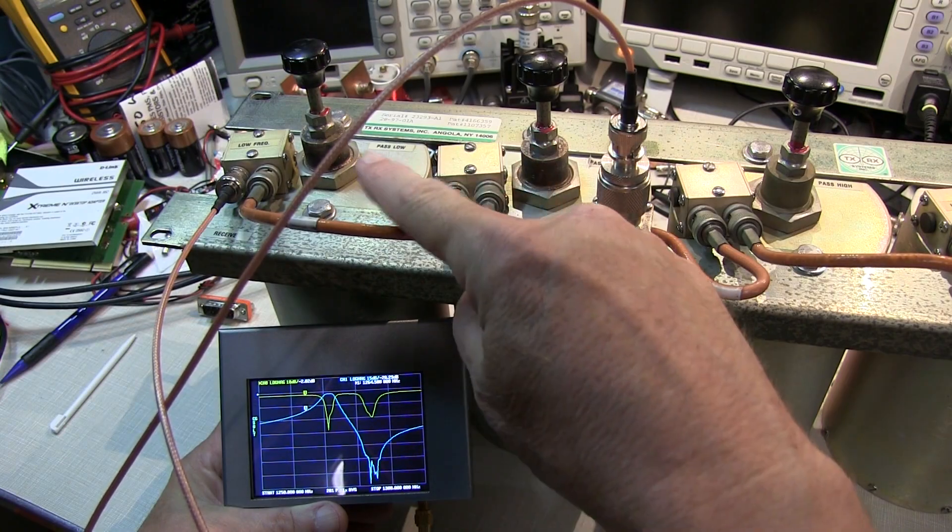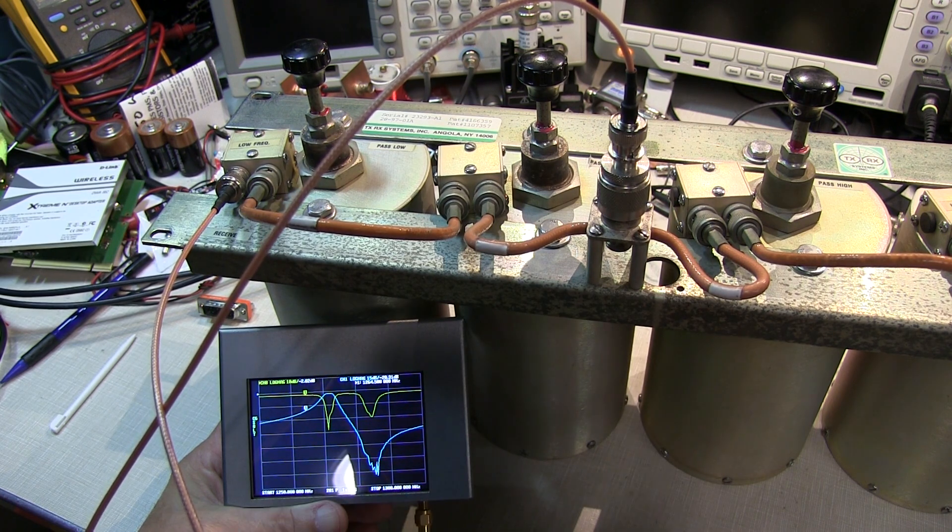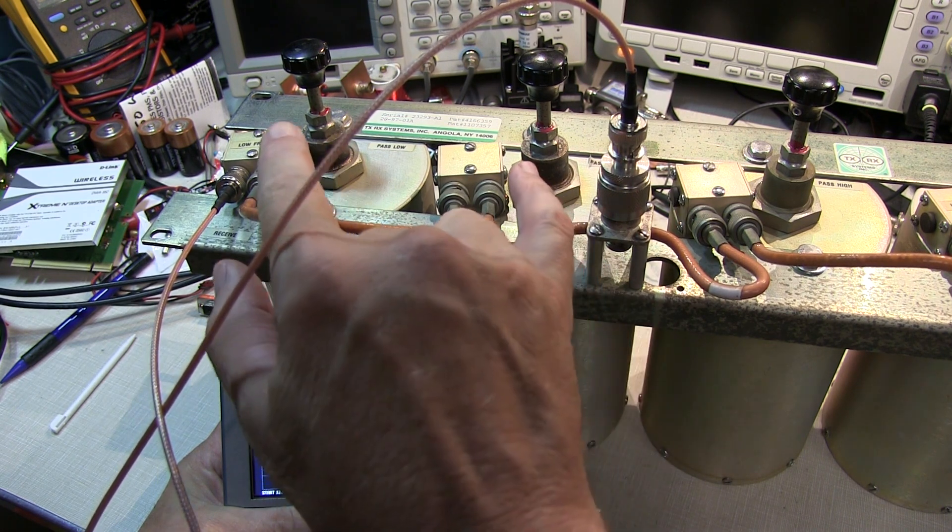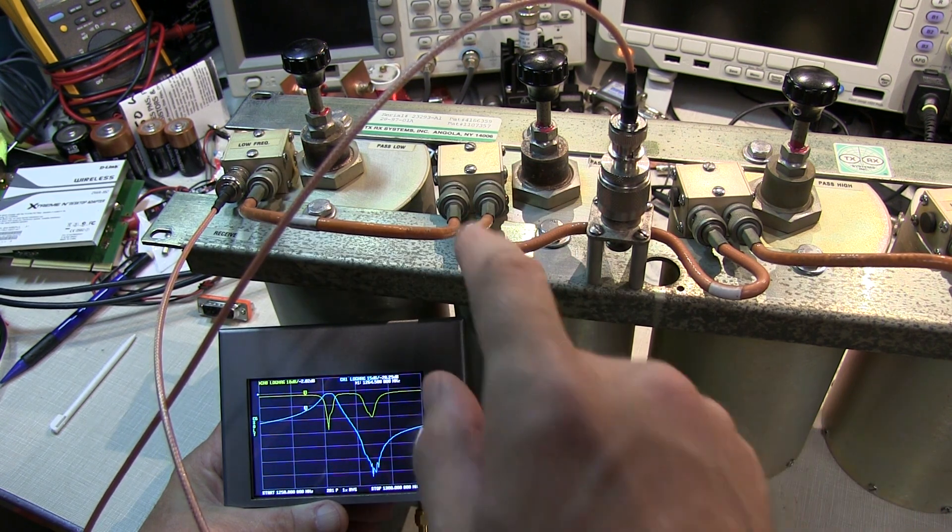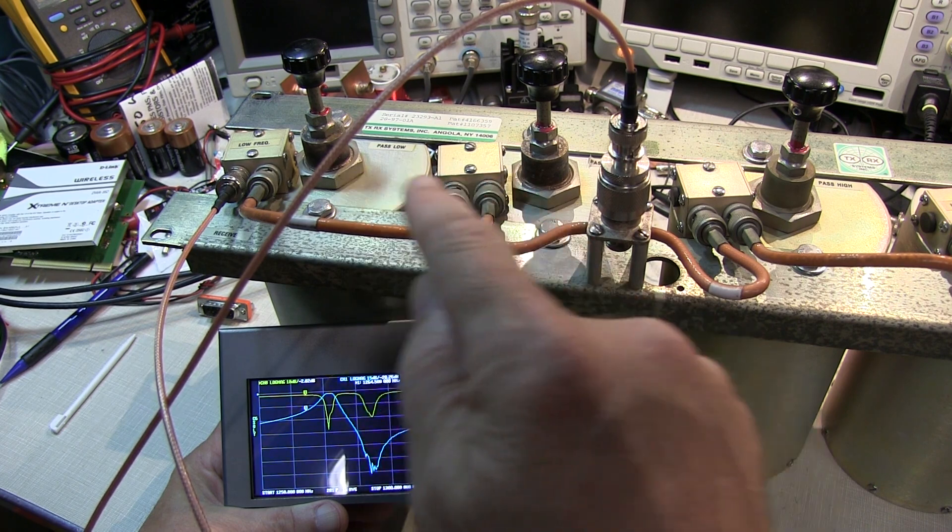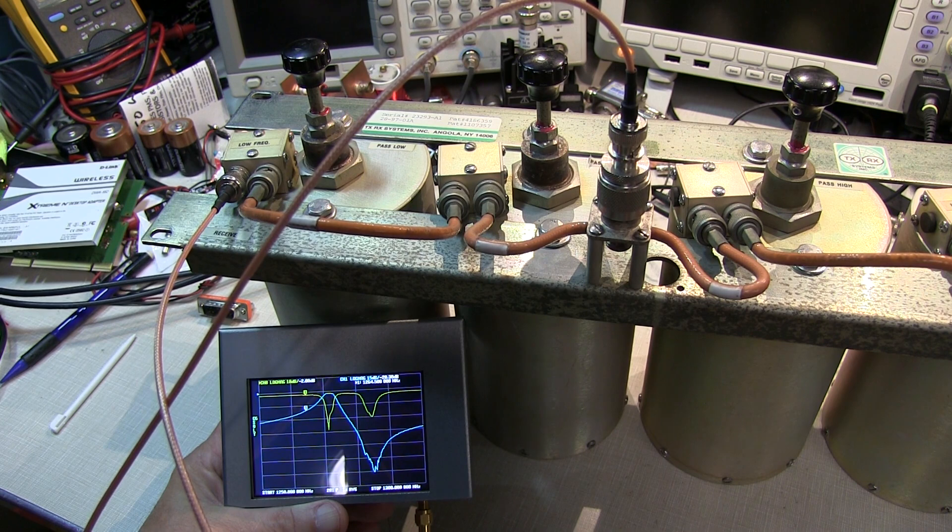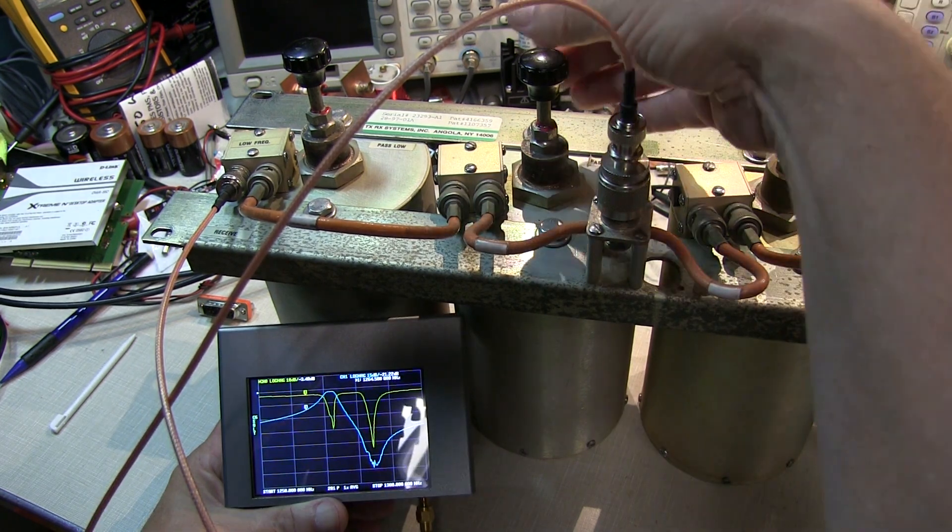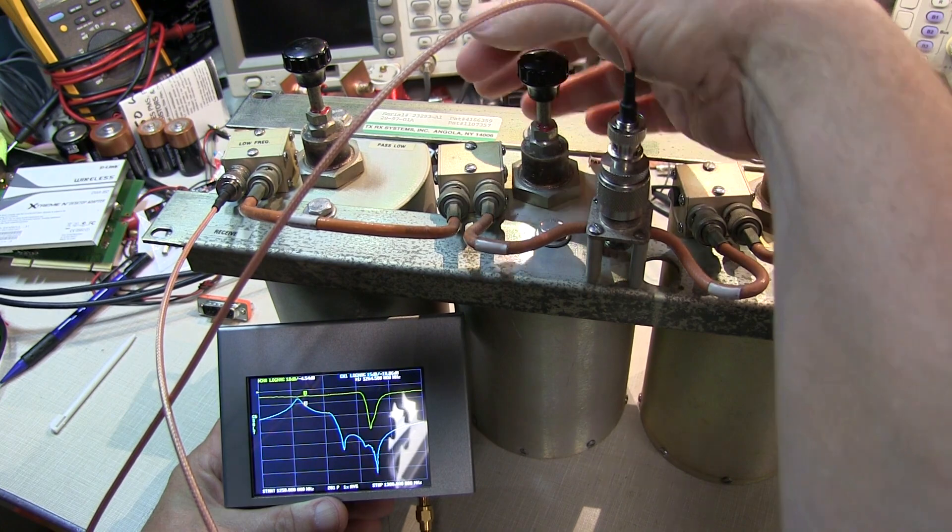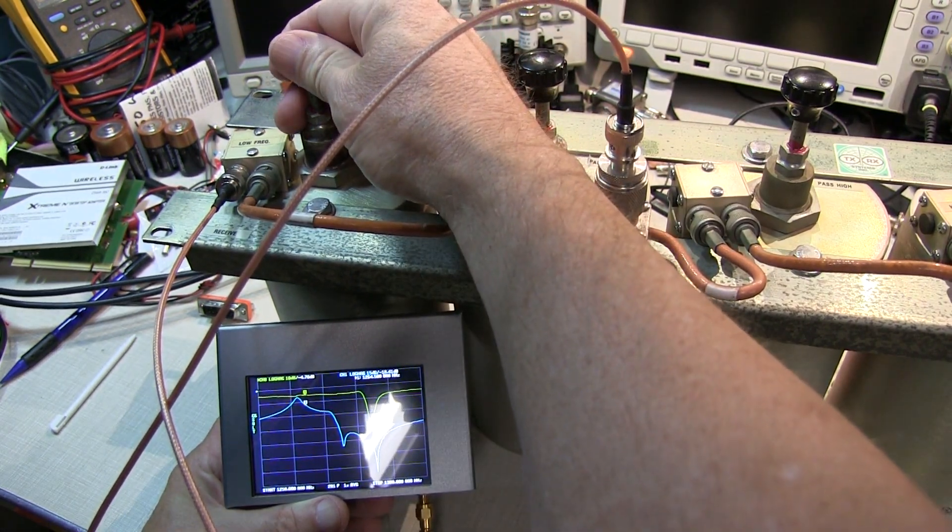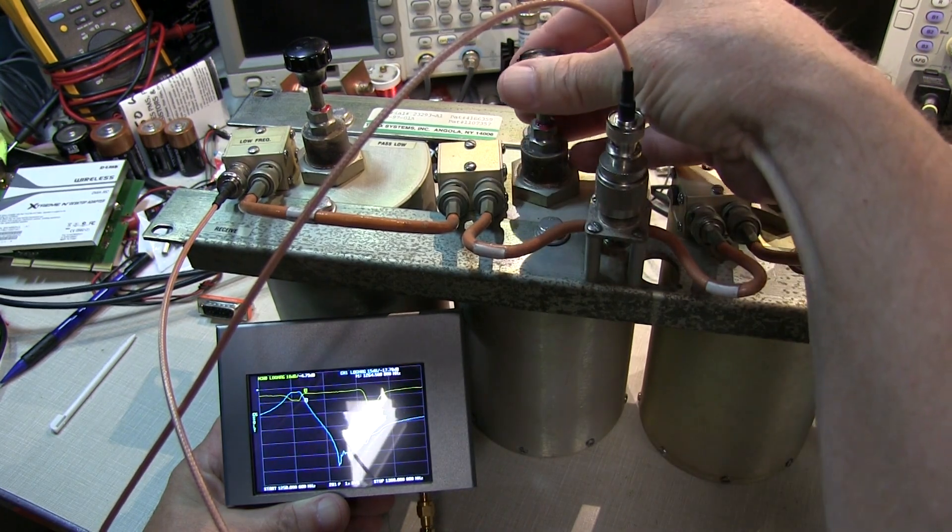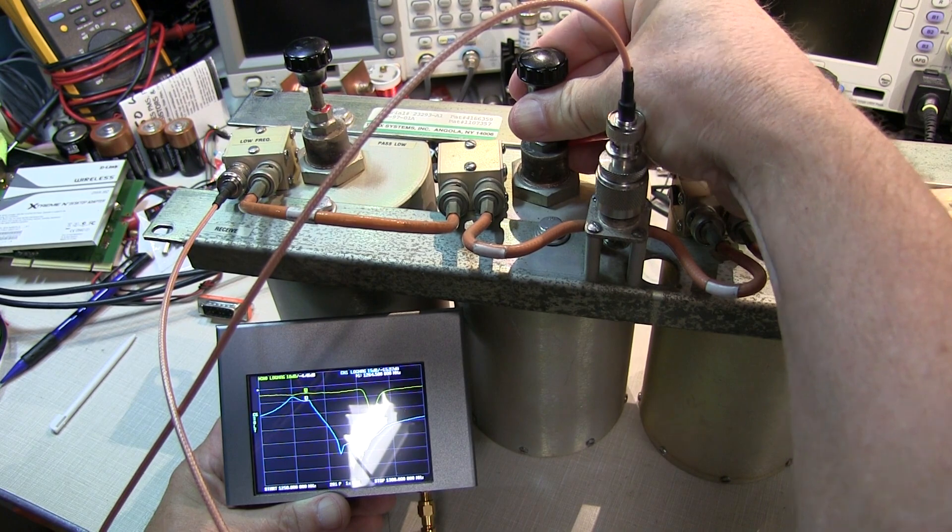I've loosened up the lock nuts on the plungers and moved my markers on the nano VNA to 1264.5 MHz, my new target frequency for the receive side bandpass. We could disconnect the other cables and tune one cavity at a time, but I think we'll do okay adjusting each one a little bit at a time. The bandpass characteristics will move down in frequency as we push the plunger down.